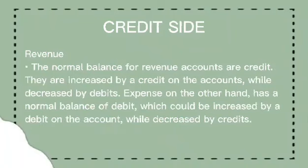At last, ang revenue. The normal balance for revenue accounts is credit. They are increased by a credit on the accounts, while decreased by debits. Expenses, on the other hand, have a normal balance of a debit, which could be increased by a debit on the account, while decreased by credits.